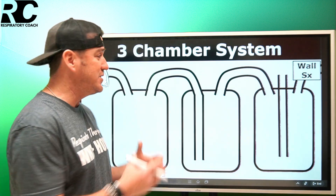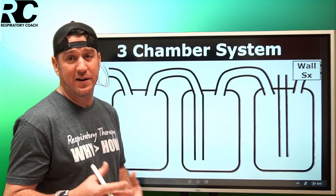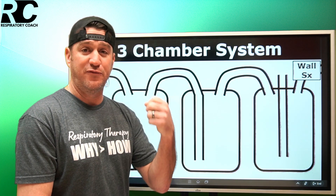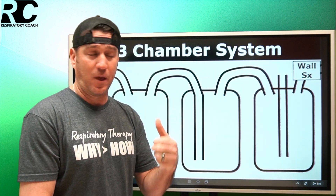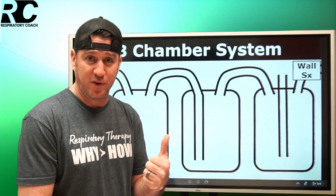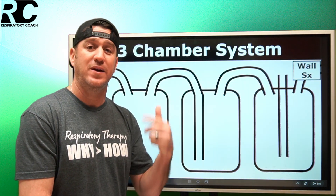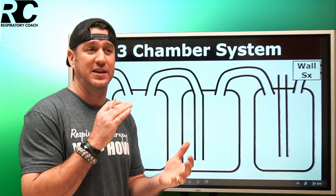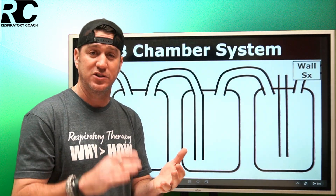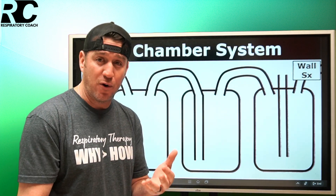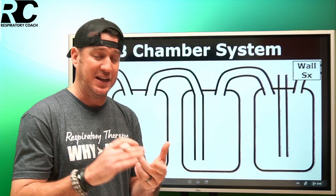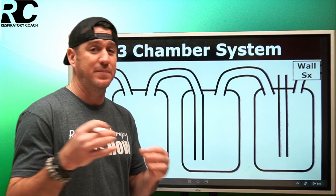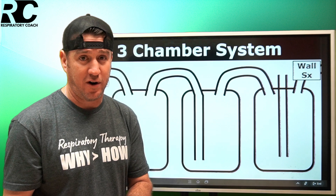Why would somebody have a chest tube? There are two primary reasons: either to evacuate fluid or pus from the pleural space, or to evacuate air. In general, we're thinking about things like a pleural effusion, a hemothorax, a chylothorax, an empyema, or a pneumothorax.